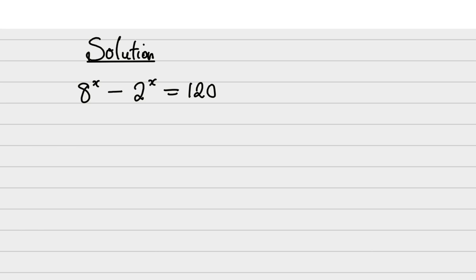Follow me and see what I'm going to be doing. Look at 8 raised to power x. Do you know that 8 raised to power x can actually be written in index form as 2 raised to power 3, then raised to power x? Now, do you know I can still write this as 2 raised to power x, all raised to power 3?